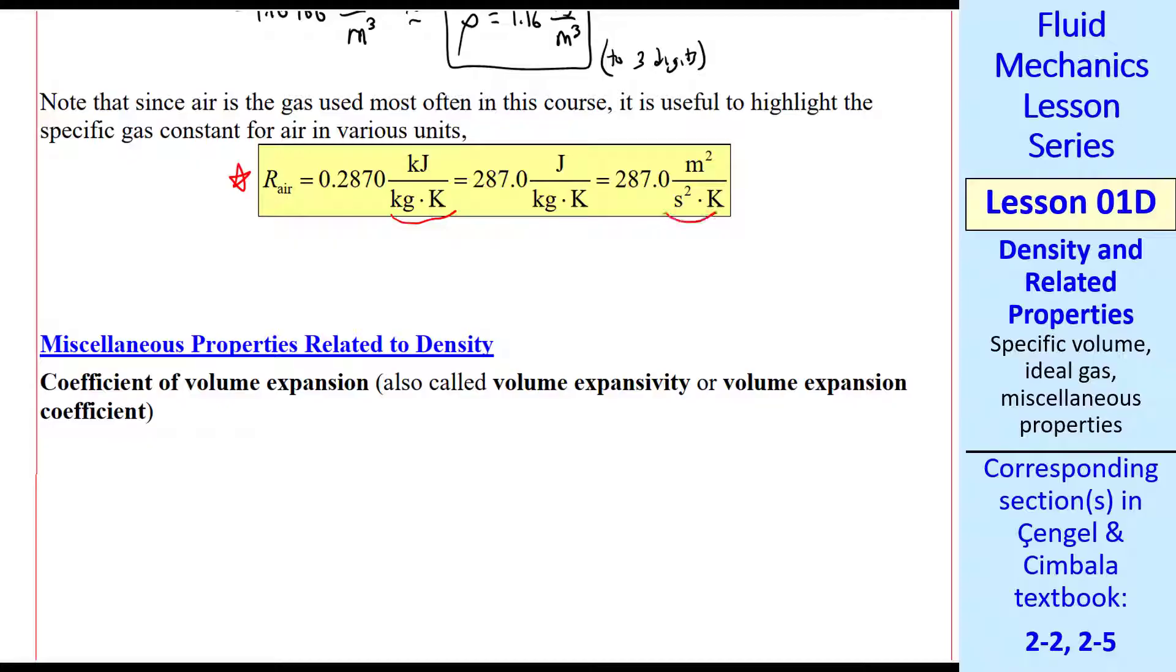How do we go from these units to these units? This is just another exercise using unity conversion ratios. A kilojoule is 1,000 newton meters. Kilojoules cancel out. And a newton is a kilogram meter per second squared. I always remember that one by Newton's second law.